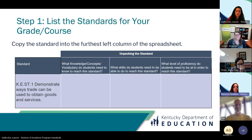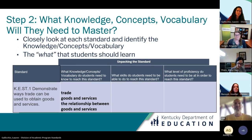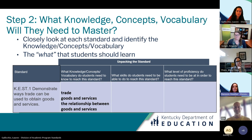The first step is to copy your standard over into the left side — we're going to use the words in that standard to break it down and determine what the demands are. The second step is: what knowledge, concepts, and vocabulary do students need to know to reach the standard? Looking at the standard, you can pull out key words that represent vocabulary and important concepts. Students are going to need to learn about trade, goods and services, and the relationship between goods and services.